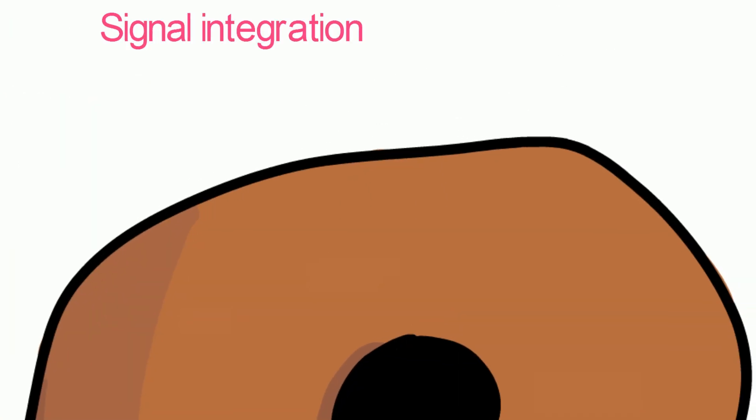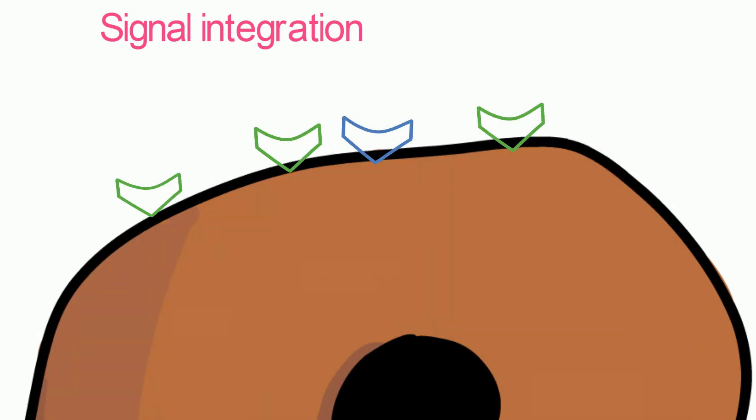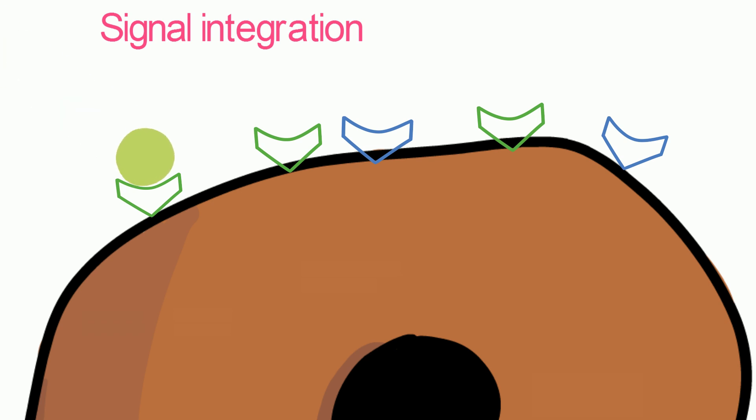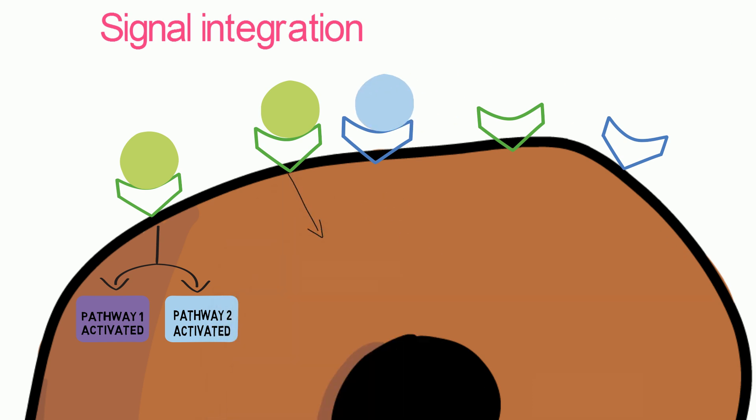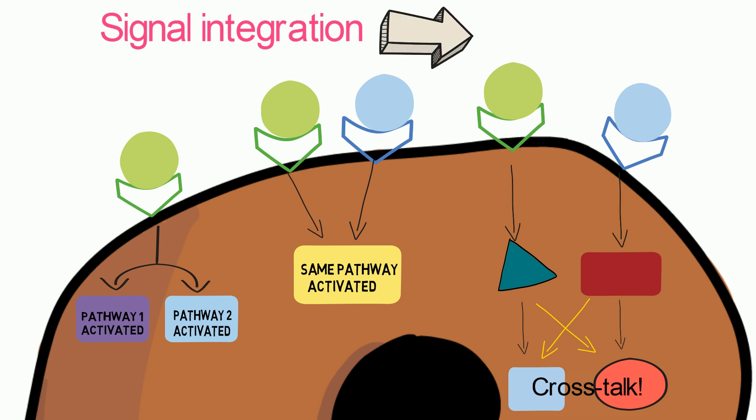Complex cell behaviors, such as cell survival, generally require integration of multiple signals. Signals can be integrated in different ways. One receptor might activate multiple pathways. Or different receptors can activate the same pathway. Or different receptors activate different pathways which cross-talk with the other. Hence, the biological response of a cell greatly depends on the combination of extracellular signals.